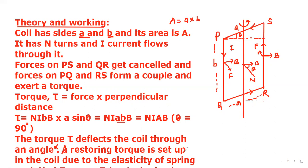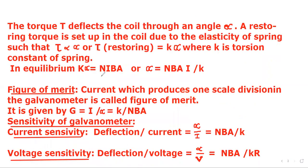A restoring torque is set up in the coil due to the elasticity of the spring, such that tau is proportional to alpha. For restoring torque, tau equals k times alpha, where k is the torsion constant of the spring.